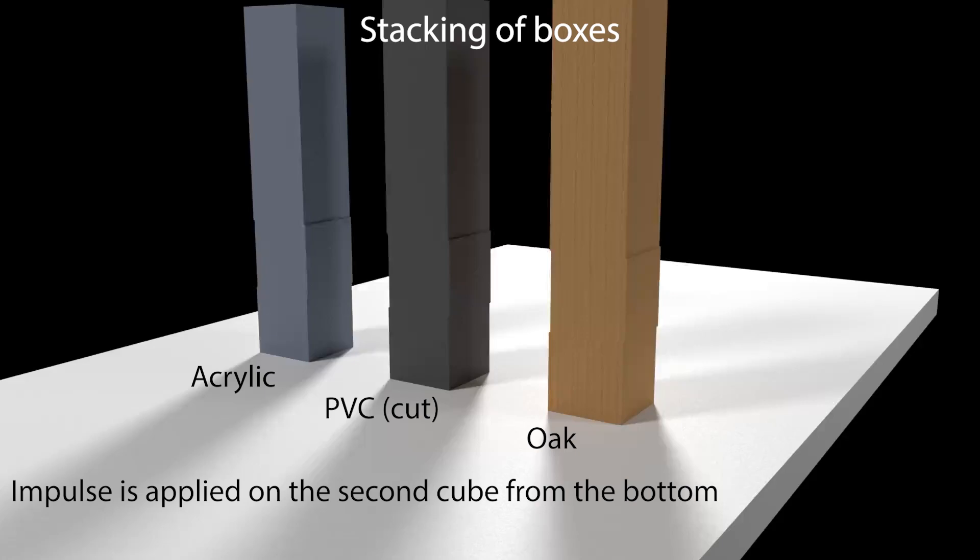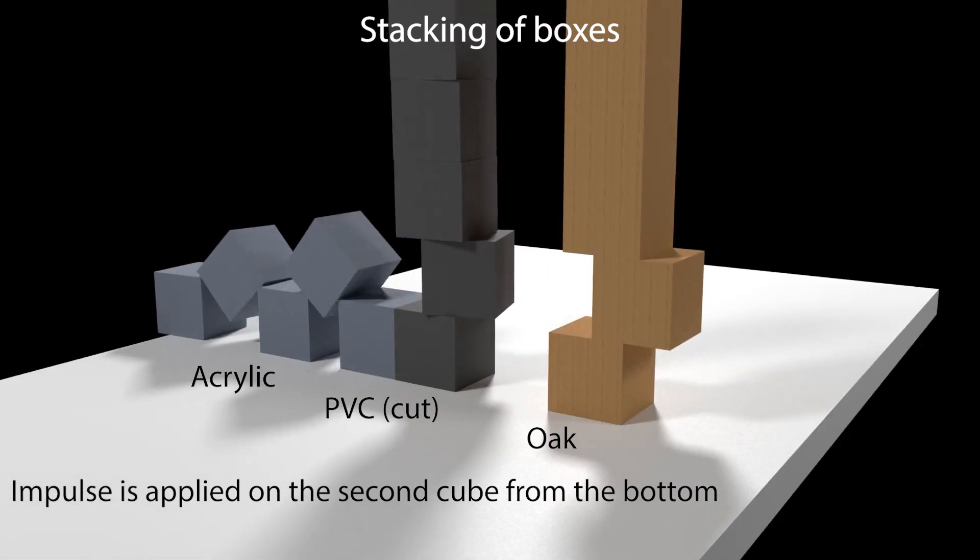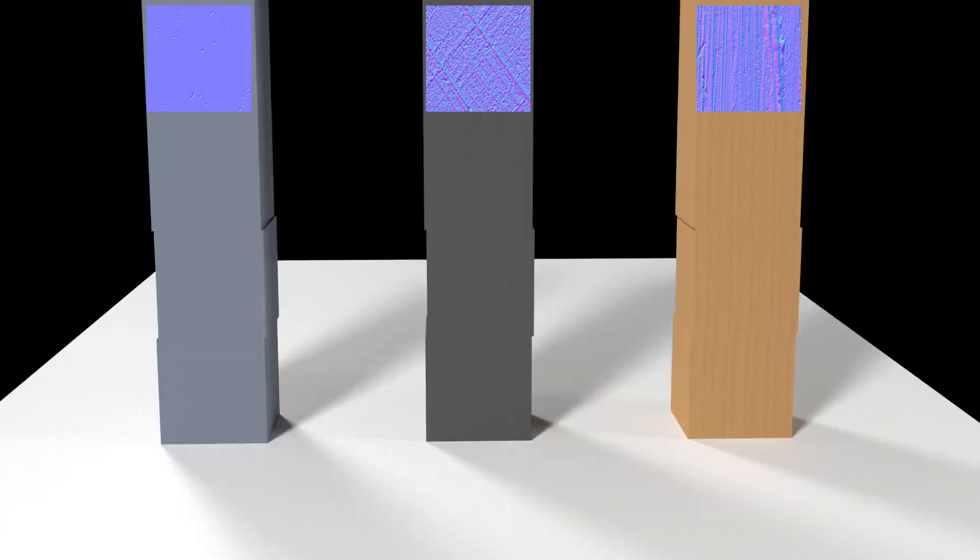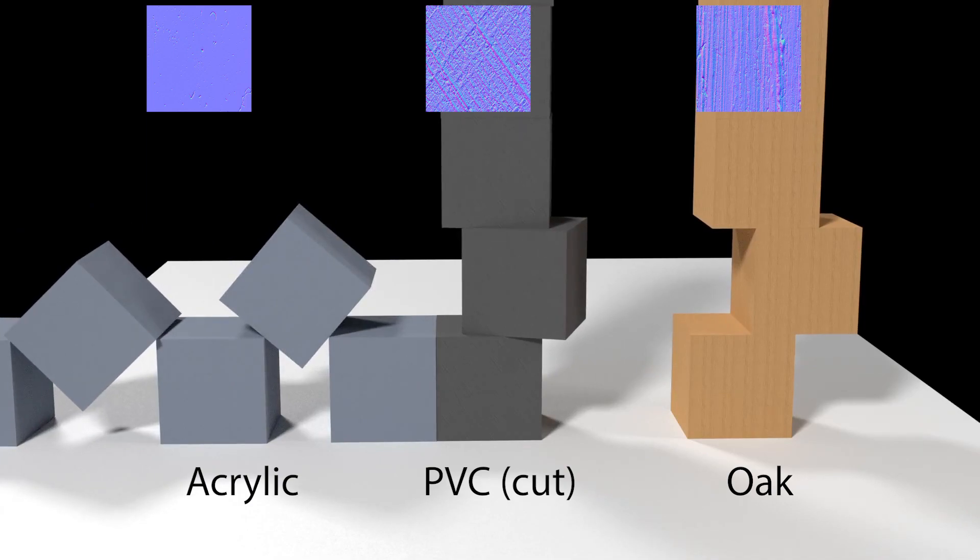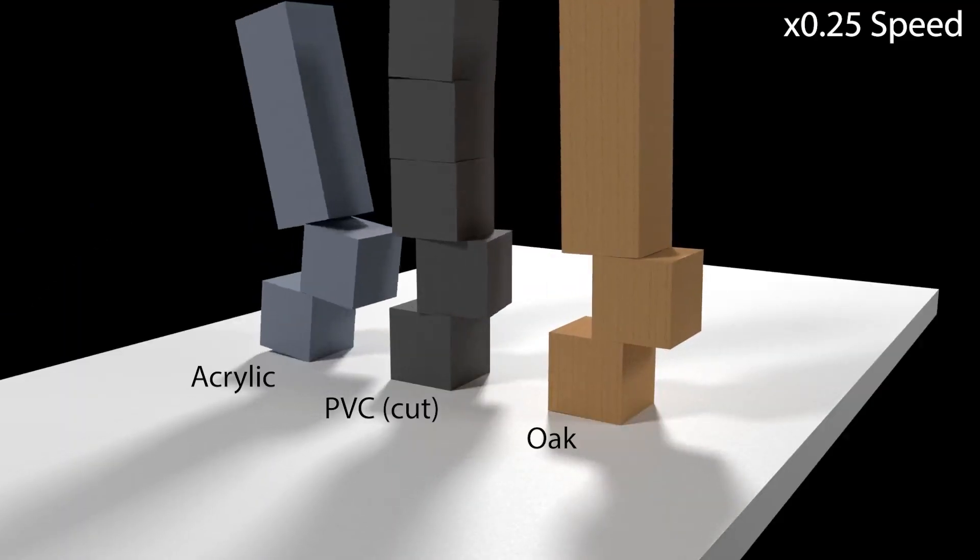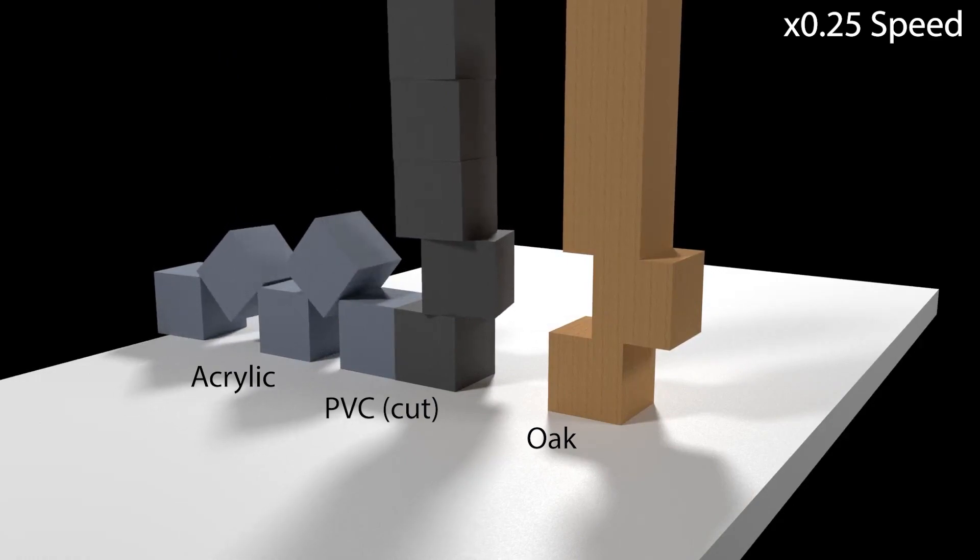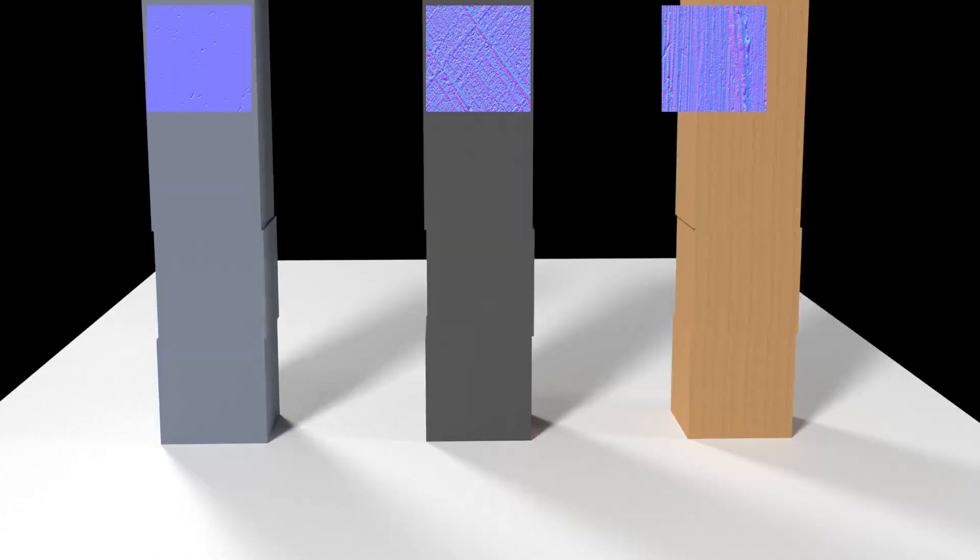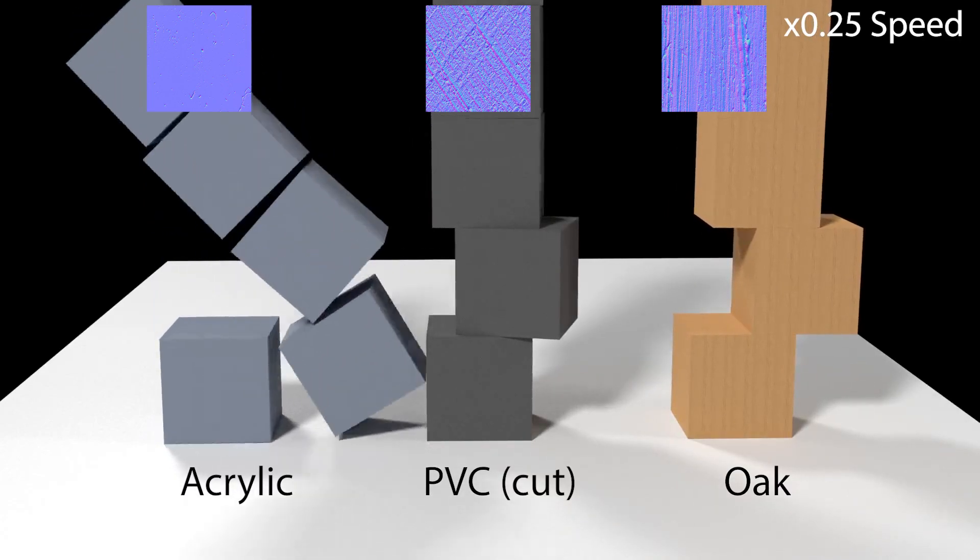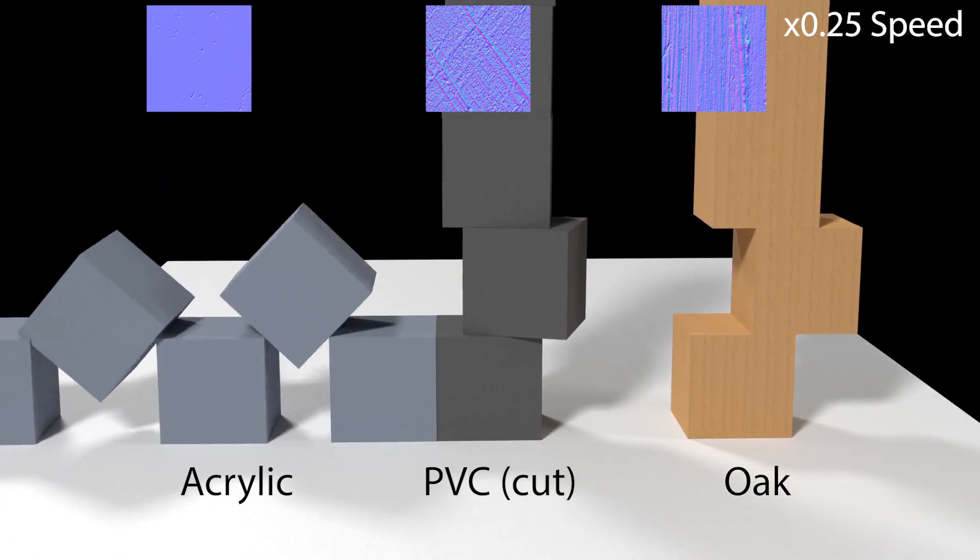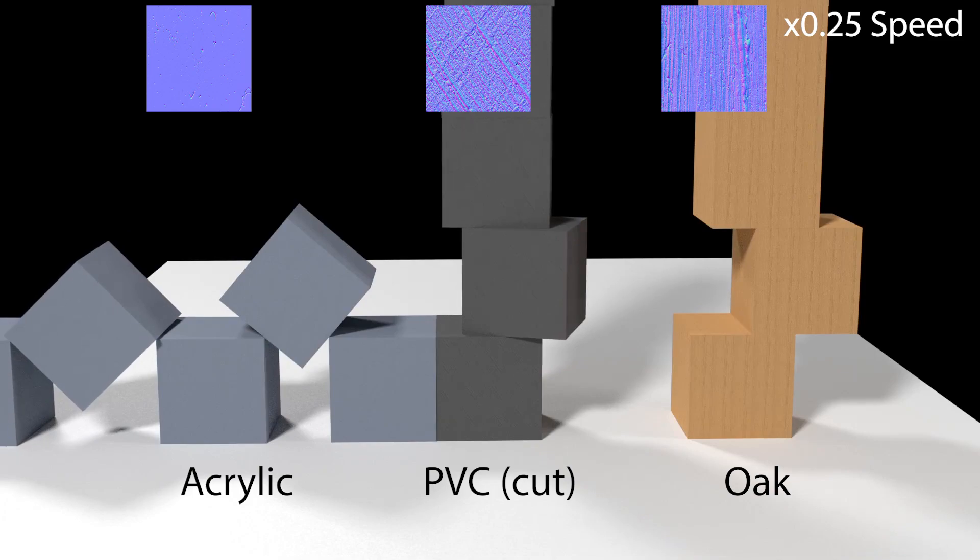Here stacks of boxes of normal texture emulating acrylic, oak, and sawed PVC. Applying a small impulse to the second from bottom cube in each stack demonstrates the effects introduced by our friction model. The acrylic cube is smooth and the impulse causes it to shoot clear off the stack. The PVC material is the roughest and moves the least, but is disturbed in such a way that causes some angular motion.